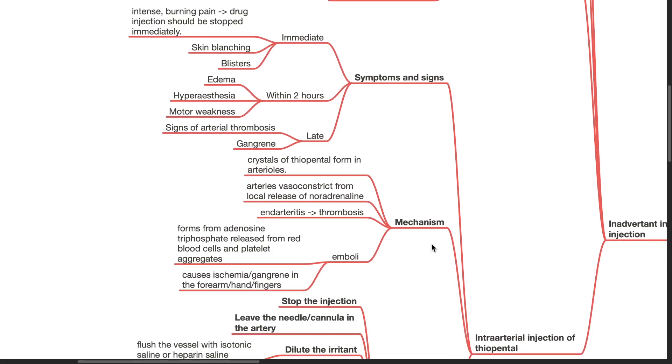Mechanism. Crystals of thiopental form in the arterioles. Arteries constrict from local release of noradrenaline. An arteritis results in thrombosis. Emboli form from adenosine triphosphate release from red blood cells and platelet aggregates. This causes ischemia or gangrene in the forearm, hand and fingers.